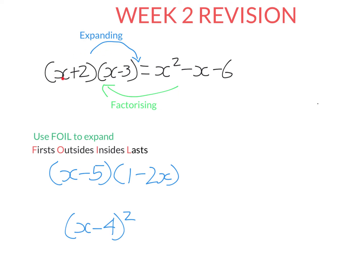Expanding is when you start with brackets like these and you end up with something that doesn't have brackets. Factorising is the exact opposite — you start with an expression that has no brackets and you end up with something that has brackets. When we factorise, we write an expression as something times something. So if you expand an expression and factorise it, you're back where you started. Expanding and factorising undo each other just like multiplication and division.